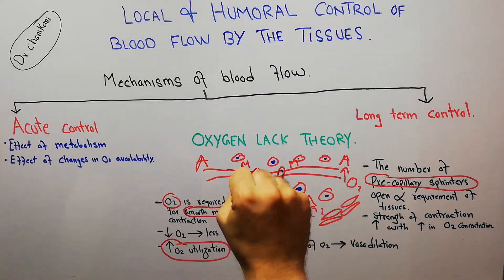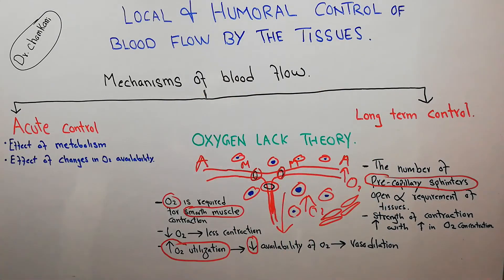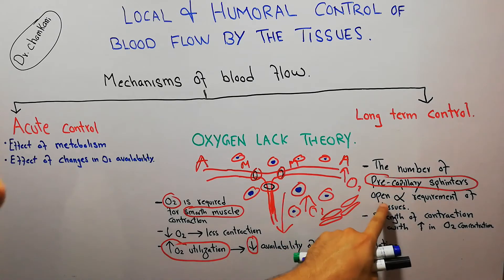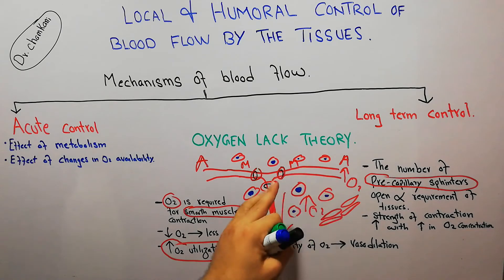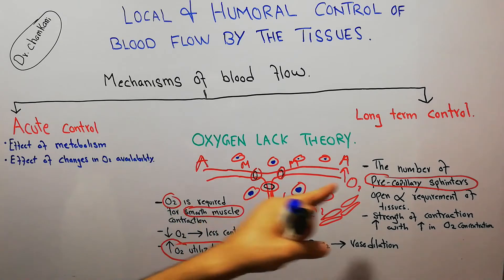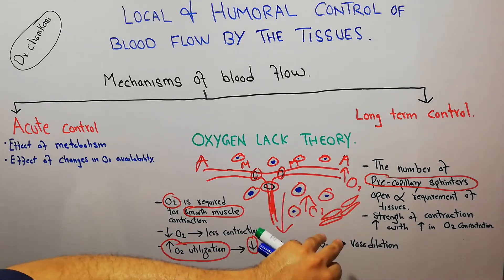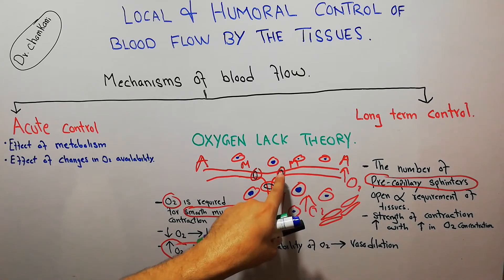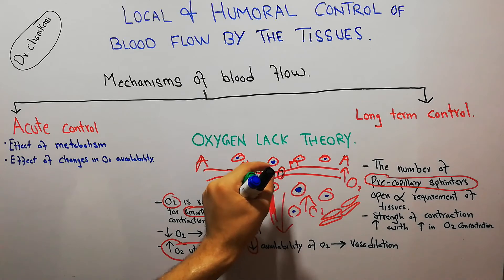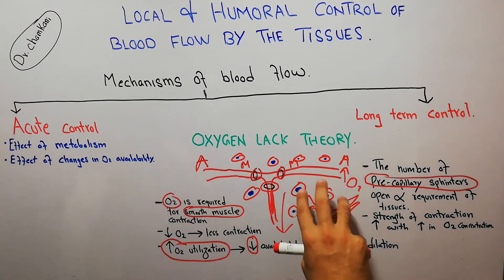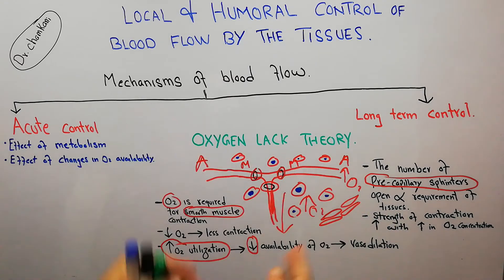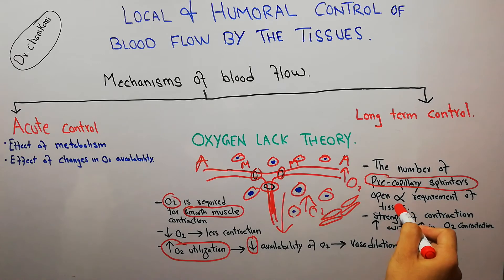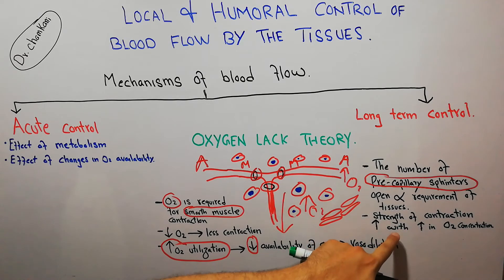With decreasing demands the pre-capillary sphincters close; with increasing demands they open. The number of open pre-capillary sphincters is directly proportional to tissue requirements. When more oxygen is consumed, less is available for contraction so they remain open; when less oxygen is consumed, more is available, they contract and close.